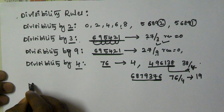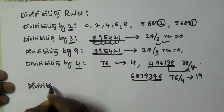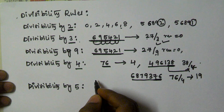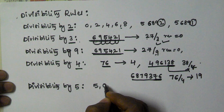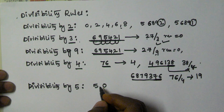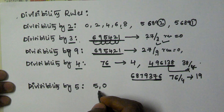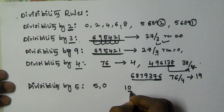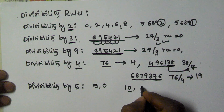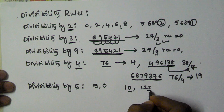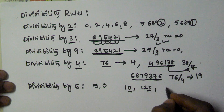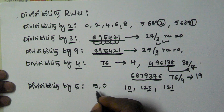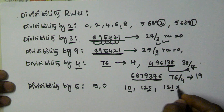Next, divisibility by 5. If the unit digit of a given number is 5 or 0, then that number is divisible by 5. For example, 10 has unit digit 0, so it is divisible by 5. 125 has unit digit 5, so it is also divisible by 5. But 121 has unit digit 1, which is neither 5 nor 0, so it is not divisible by 5.